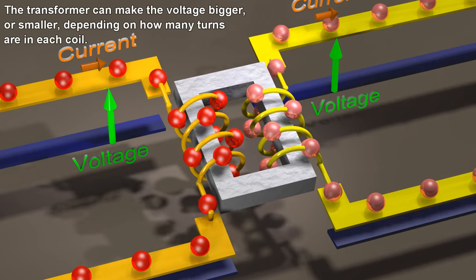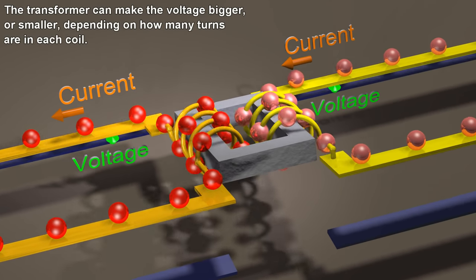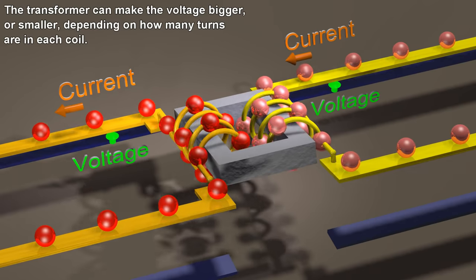The transformer can make the voltage bigger or smaller depending on how many turns are in each coil.